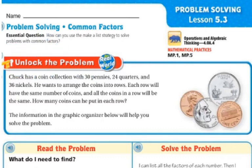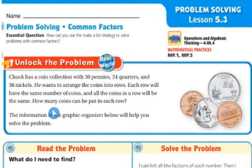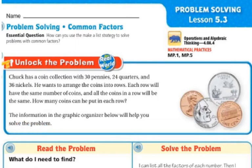Let's unlock the problem. Chuck has a collection with 30 pennies, 24 quarters, and 36 nickels. He wants to arrange the coins into rows. Each row will have the same number of coins, and all of the coins in a row will be the same. How many coins can he put in each row? The information in the graphic organizer below will help you solve the problem.